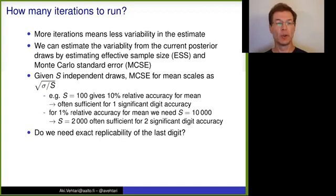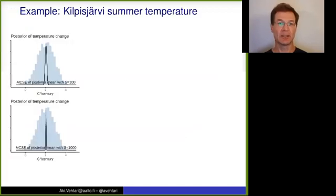And so the question is then, do we need exact replicability of that last digit if we repeat the computation? And then you can get with less draws. If you allow that it can be sometimes close, but not exactly the same.